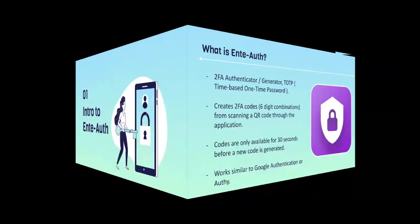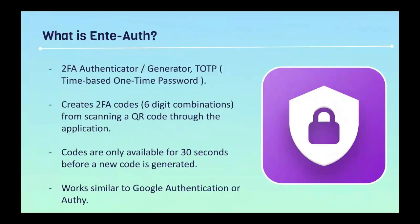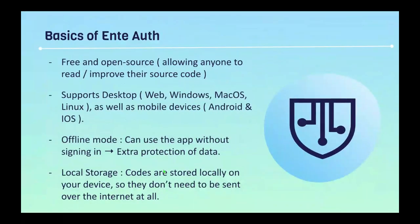First, we're going to introduce Ente Auth. Ente Auth is a two-factor authenticator generator that also provides time-based one-time passwords. Time-based one-time passwords are temporary passwords that generate once. It creates two-factor authenticators from scanning a QR code through the application. Codes are only available for 30 seconds before a new code is generated, so you have to enter the code quickly. It works similarly to Google Authenticator or Authy, which is another authenticator like Ente Auth.